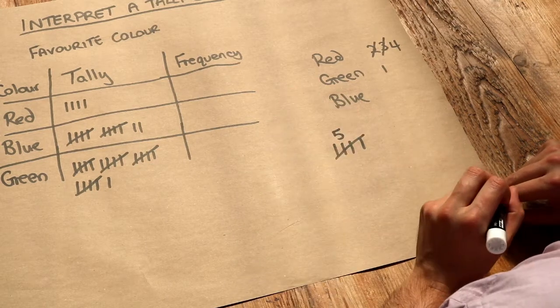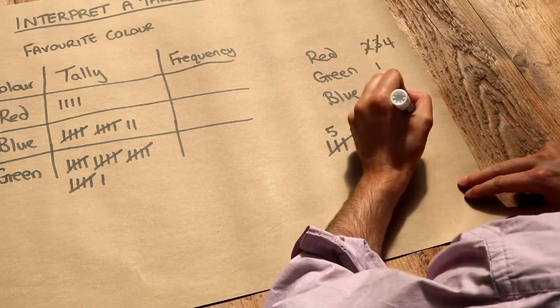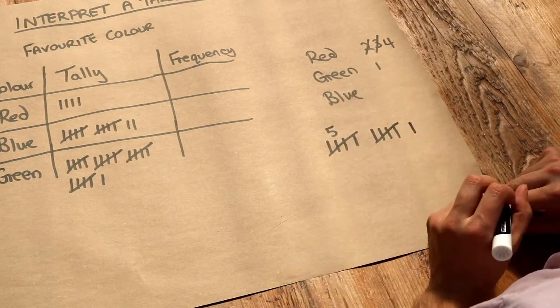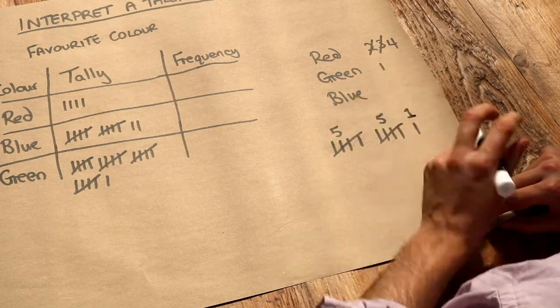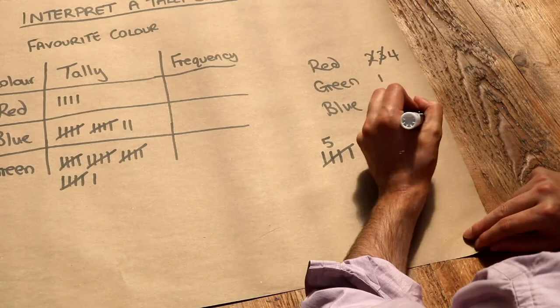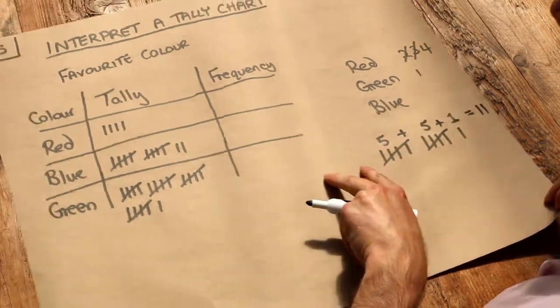If I had another five like that and then one more mark, we can instantly tell we've got five people, another five people, and then one more person—that's eleven people in total. Let's look at this tally chart.